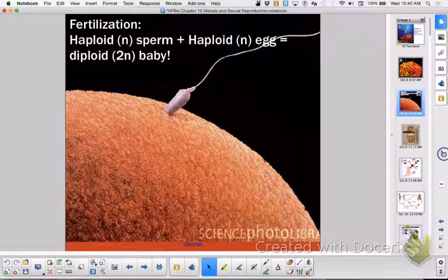If you're sexually reproducing, you can only send half of your chromosomes in that sperm and half of your chromosomes in your egg. Because when that sperm fertilizes that egg, you're going to form a new combination of traits, of alleles, of genes, a new recombination, and that will be diploid. So you have a haploid plus a haploid makes a diploid.